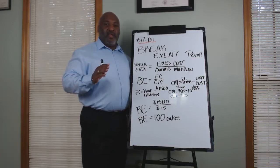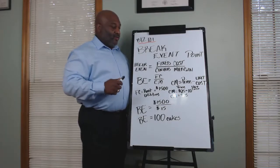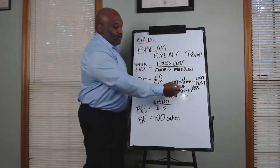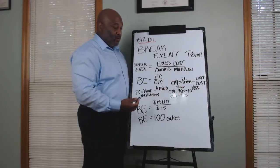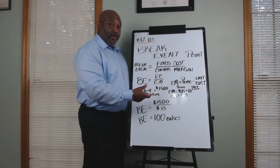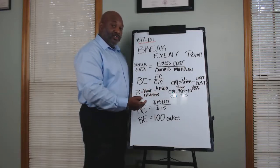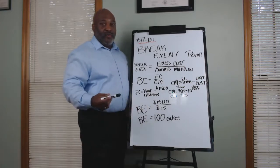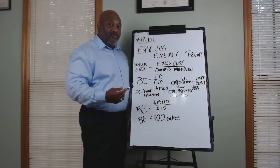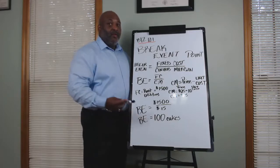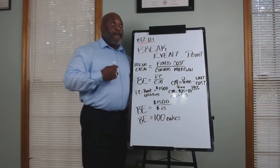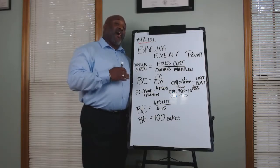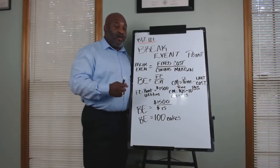A couple adjustments can be made here and there. What do I mean by that? Well, you can always increase the price, and when you increase it, that's going to increase your contribution margin. And by increasing your contribution margin, that can go from $15 to $20, and after you've done that, that means what? You have to sell less cakes, but it still goes back to it again. Can you sell cakes at a higher price depending on that particular market you're in?